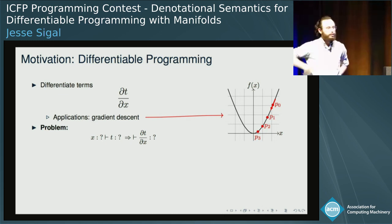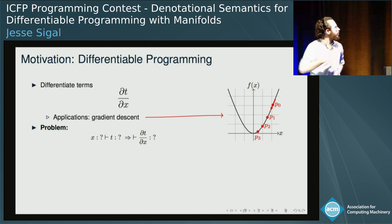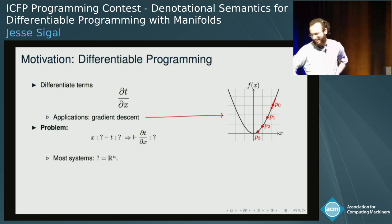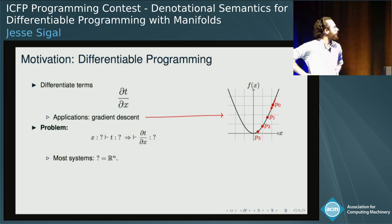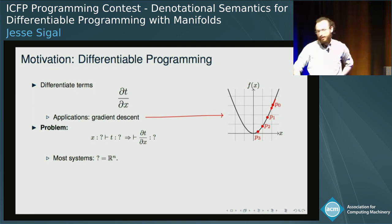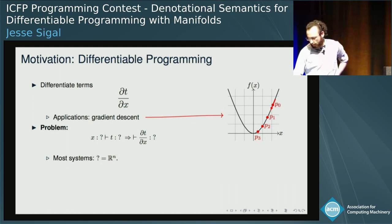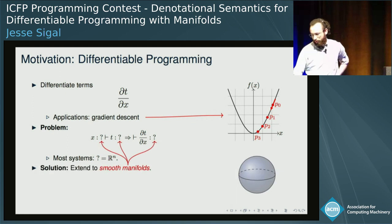As functional programmers, we love types — so how many types can we put in there? The current issue is most systems really only let you differentiate on Euclidean spaces, which is a bit restrictive, and you can't necessarily capture what you want with your types. So what's the solution? We move to smooth manifolds.